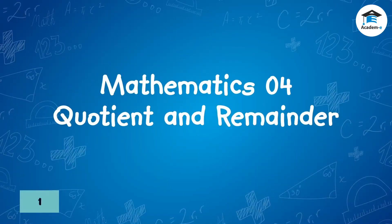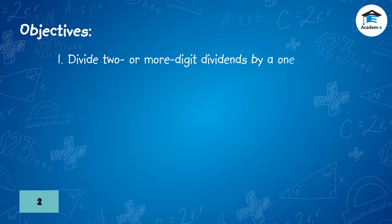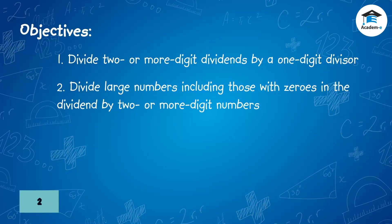Mathematics for quotient and remainder. Objectives: at the end of the lesson you should be able to divide two or more digit dividends by a one-digit divisor, and divide large numbers including those with zeros in the dividend by two or more digit numbers.